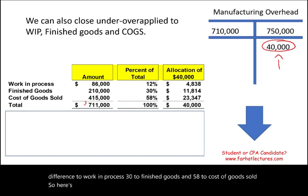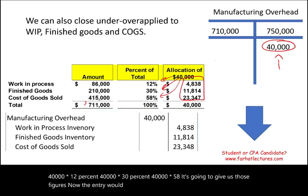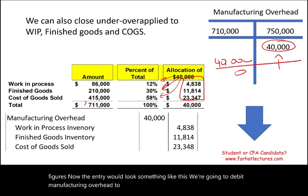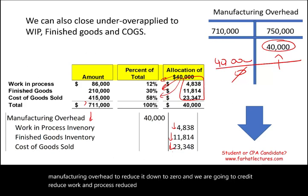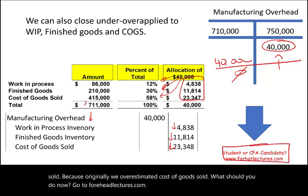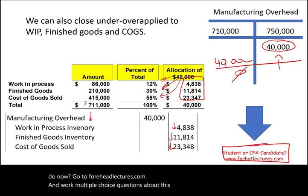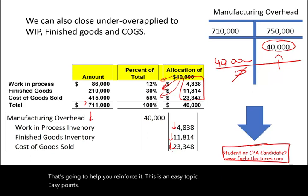So $40,000 times 12%, 30%, and 58% gives us the amounts allocated to each account. The journal entry debits manufacturing overhead to bring it to zero and credits work in process, finished goods, and cost of goods sold accordingly, since we originally overestimated. Go to farhatlectures.com and work multiple choice and true-false exercises on this topic. It's an easy topic — invest in yourself, invest in your career, good luck, and study hard.